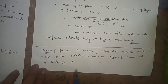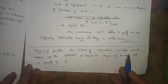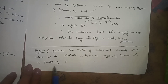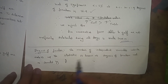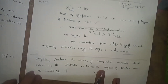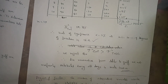Degrees of freedom: the number of independent variates which make up a statistic is known as degrees of freedom, and it is denoted by nu. This completes the chi-square goodness of fit example. Thank you.